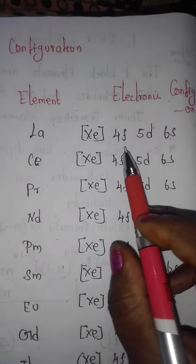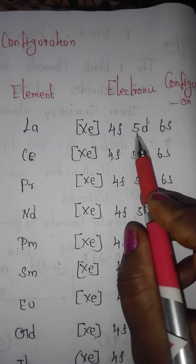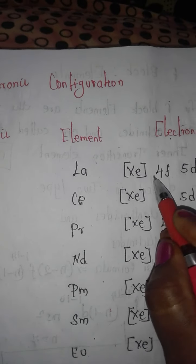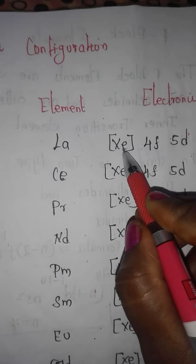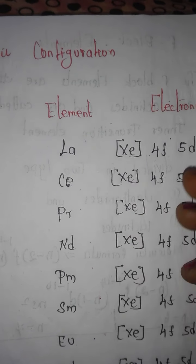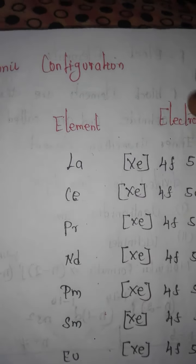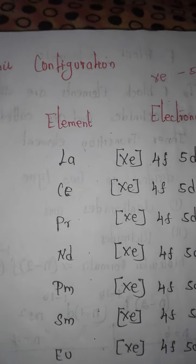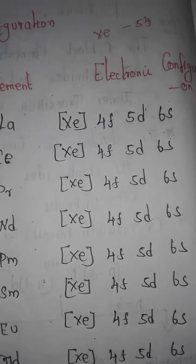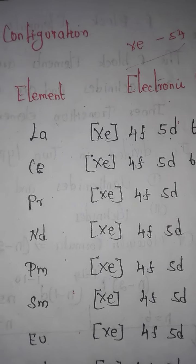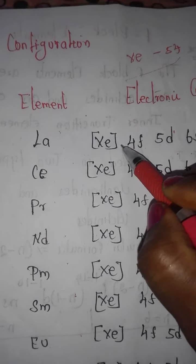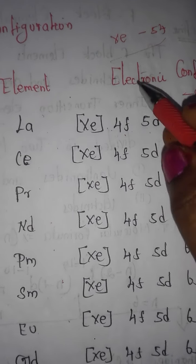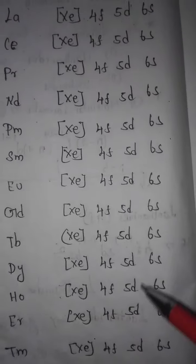The molecular formula common to all lanthanides involves 4F, 5D, and 6s orbitals. The 4F 5D 6s configuration is common to all lanthanide elements.